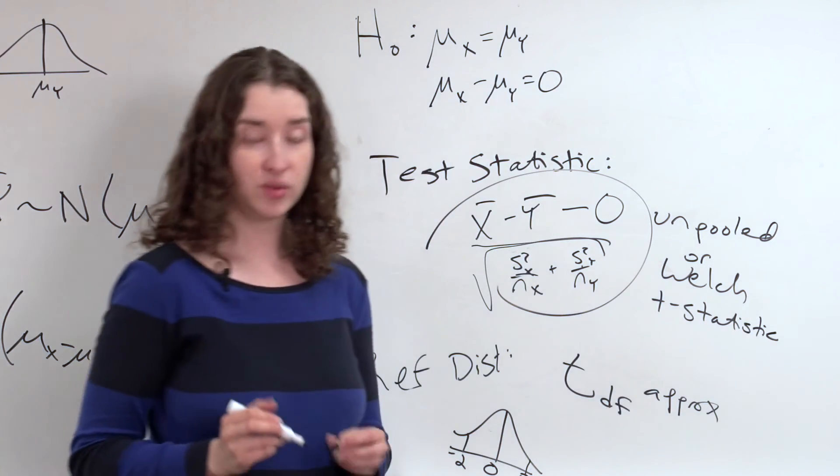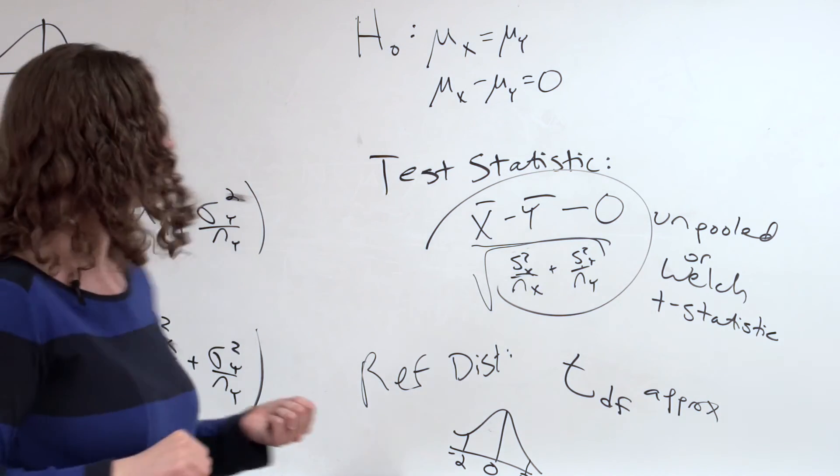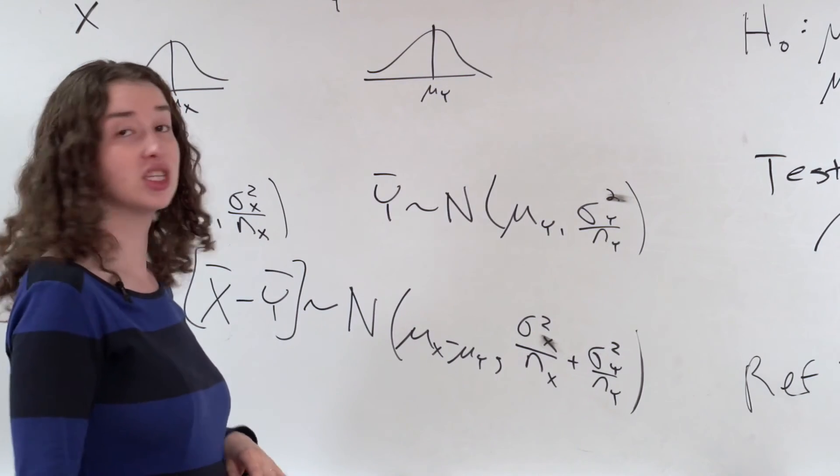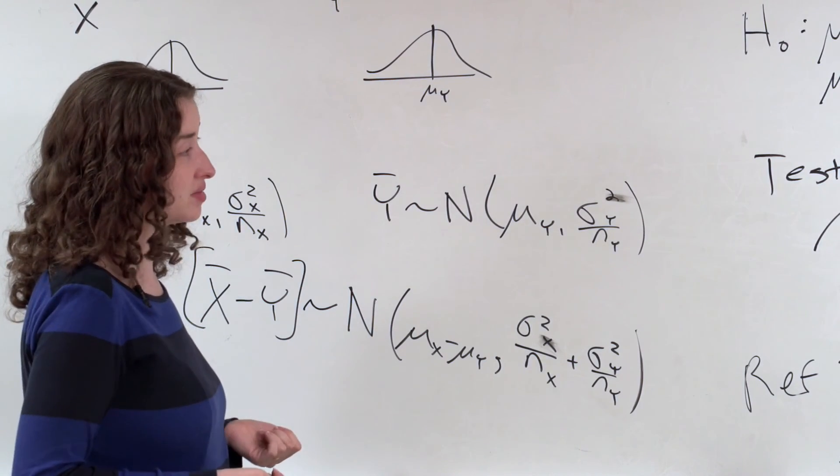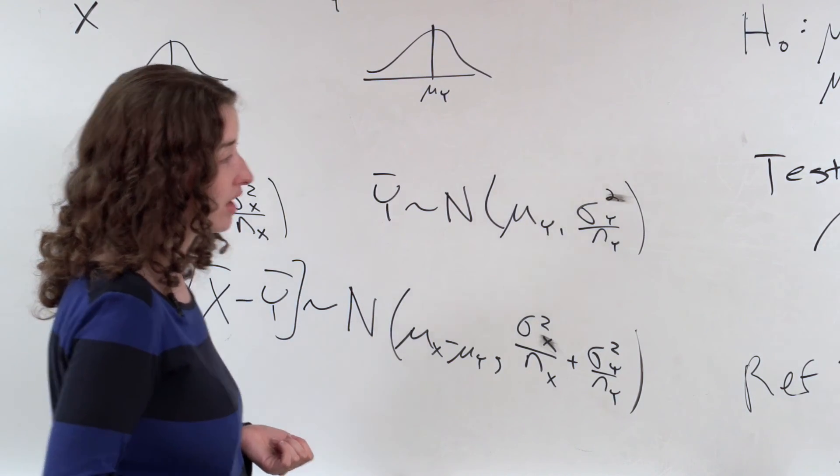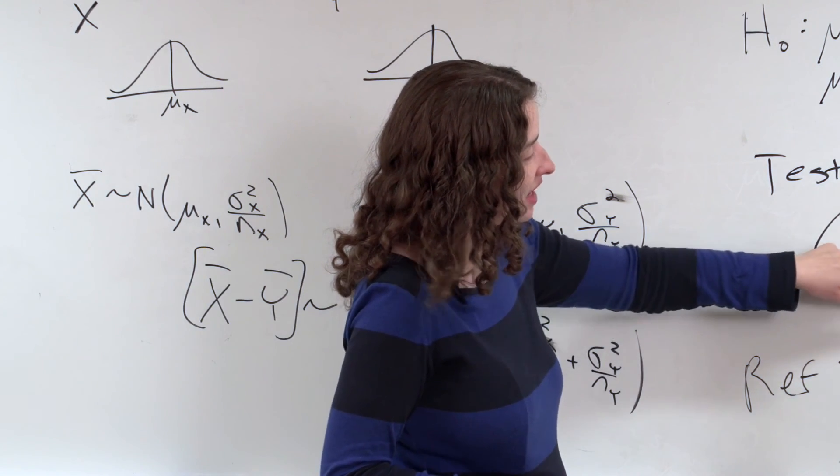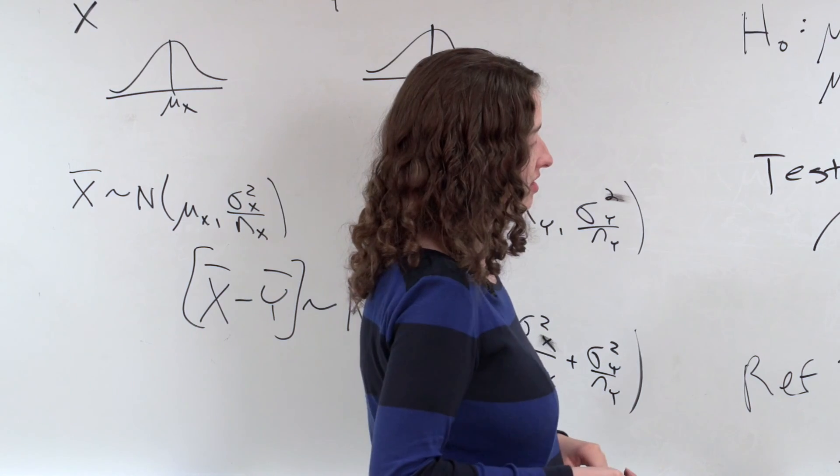What did I have to assume here? I had to assume that I have independent samples from the population. I was supposed to assume that each of those populations was normal. I had to make that assumption. And then I just plugged in my estimates of the variance.